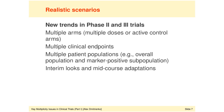Clinical trials with multiple arms—meaning multiple doses or active control arms—are very common. We also see very commonly in phase 3 development multiple clinical endpoints including multiple primary and multiple secondary endpoints. Multiple patient populations are also very common. In addition, interim looks and different types of mid-course adaptations are fairly common in phase 3 clinical trials.